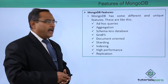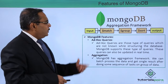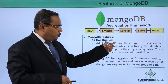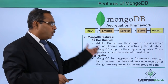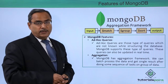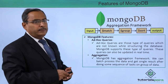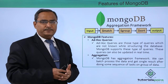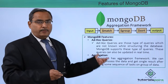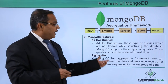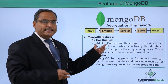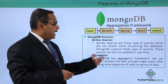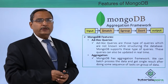Let us start with ad hoc queries. Ad hoc queries are those queries which are not known while structuring the database. Sometimes, when we are designing our database, we may not know the future query types. Those unexpected queries are known as ad hoc queries, and they can easily be handled by MongoDB. MongoDB supports these queries and they can also be updated in real time.